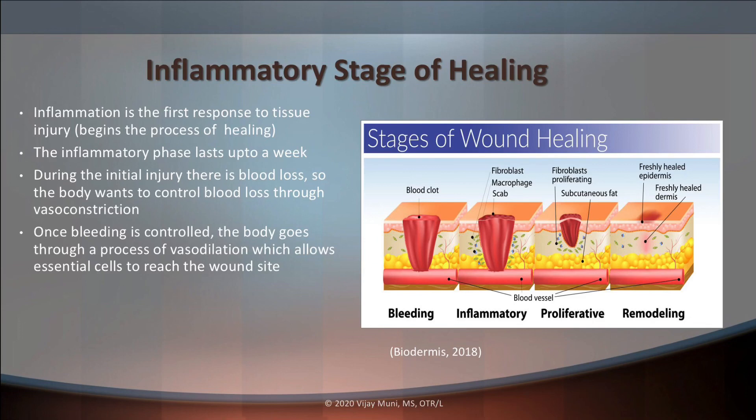We might see some red or blue marks on the area of injury. During this acute stage, we're going to see some blood loss, and so for our body to control how much blood we're losing, we go through a process called vasoconstriction, which essentially just means we're trying to close up the blood vessels to prevent any more blood from coming out.